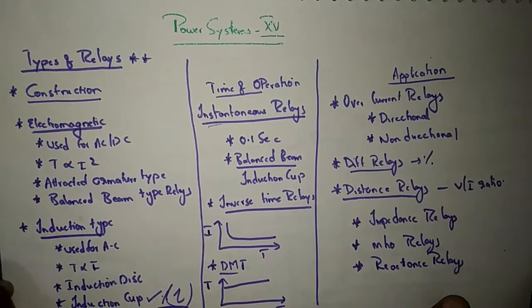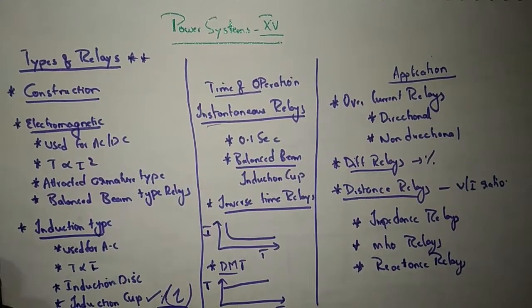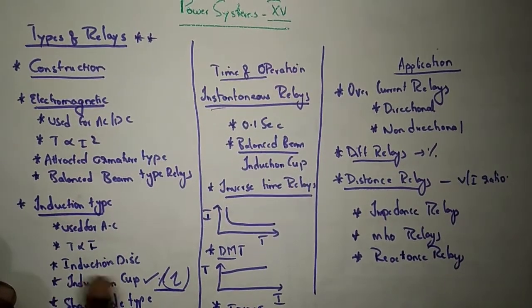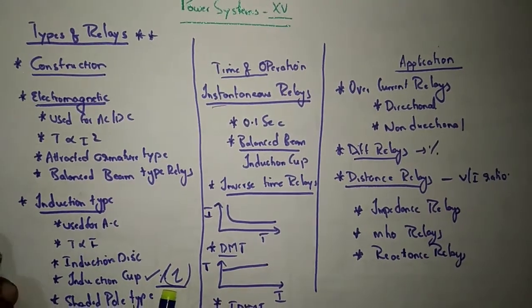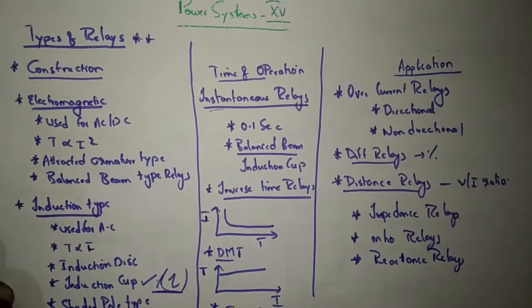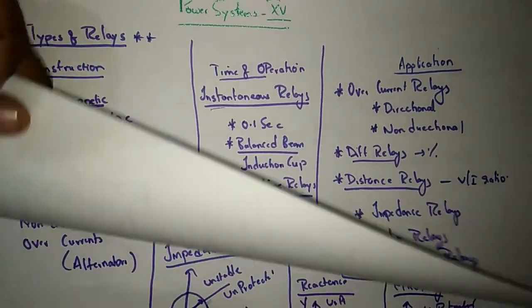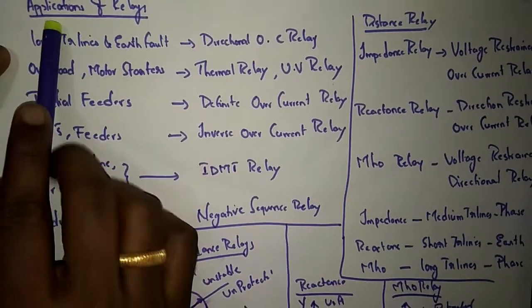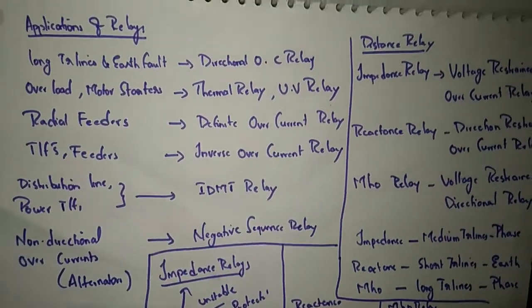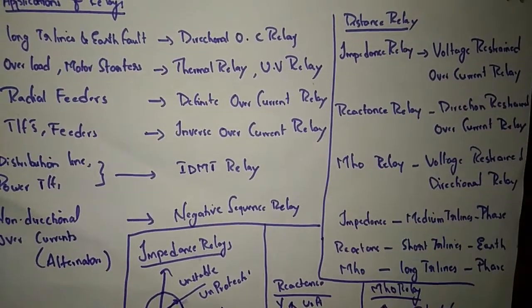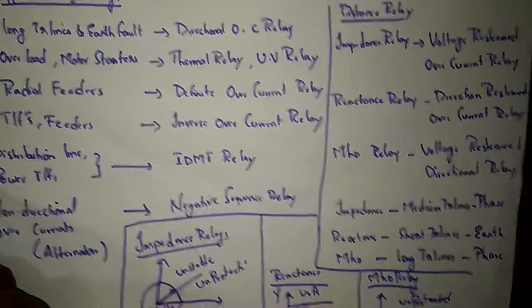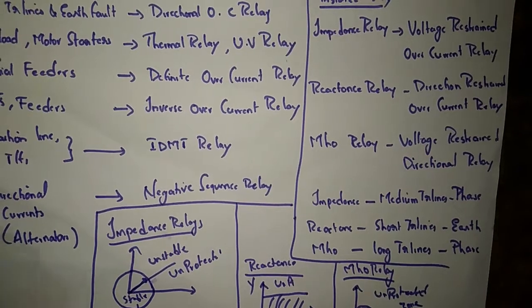Among all these relay types, the induction cup structure is the most efficient type of relay. We also covered different types of relay applications and their examples, including distance relays and their characteristics and applications for long, medium, and short transmission lines.